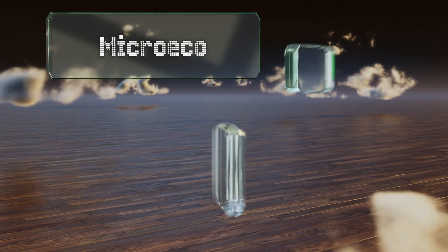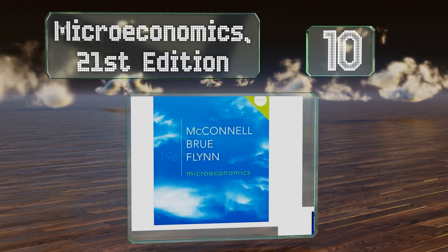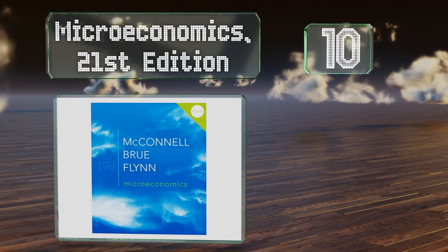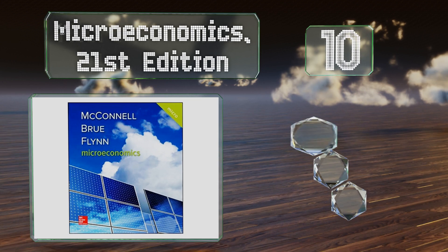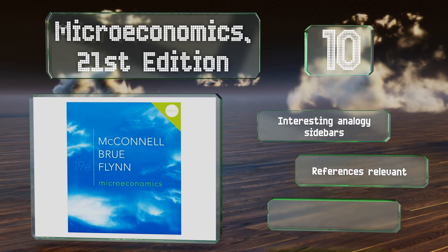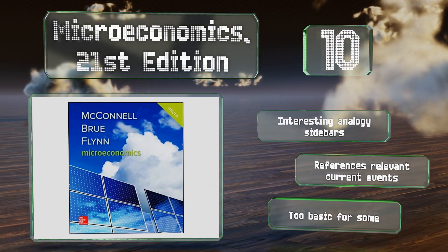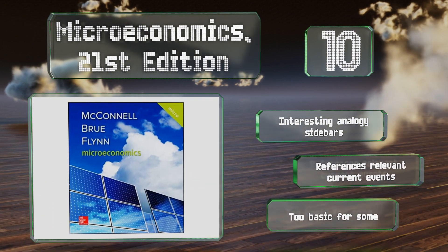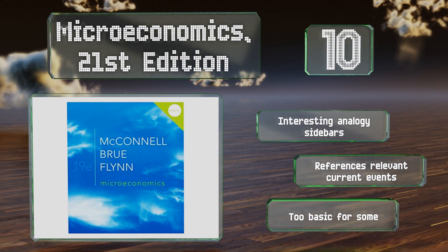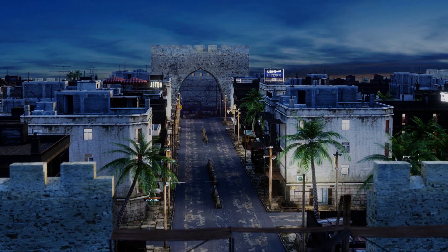Starting off our list at number 10, integrated with handy online tools such as interactive graphs and support videos, the student-oriented Microeconomics 21st Edition is a comprehensive option that engages learners by facilitating peer discussions, healthy debate, and intuitive thinking. It comes with interesting analogy sidebars and references relevant current events. However, it is too basic for some.